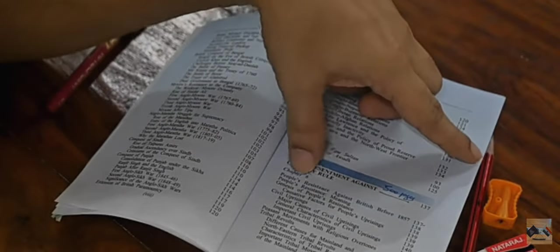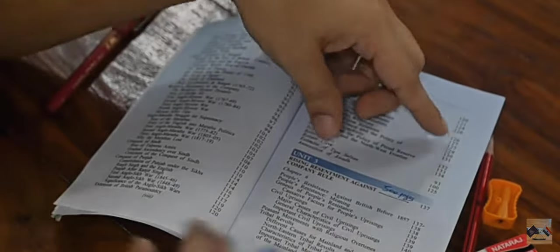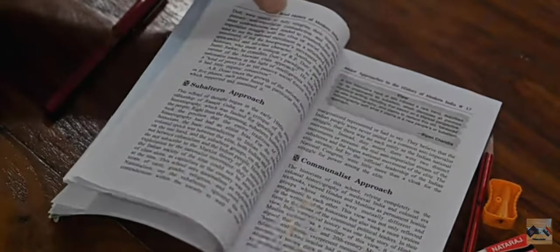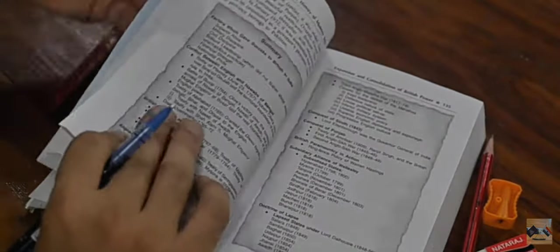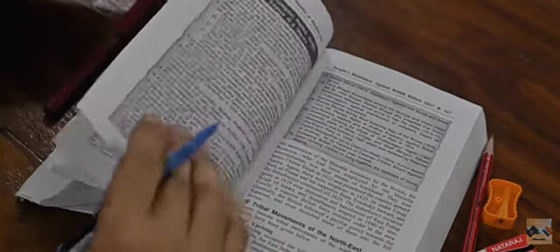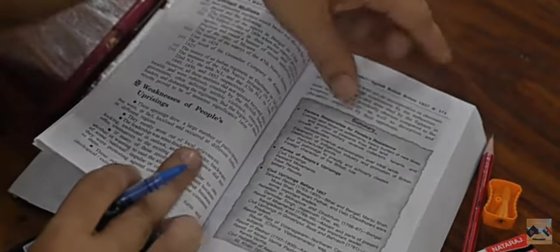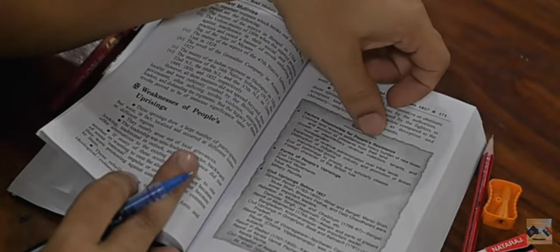We will see chapter six, people's resistance against British before 1857. This is the people's uprising chapter, and we will go through this chapter to give you a sense of how I do my readings. So I go to page number 137. This is the chapter. If you go to the end of the chapter right away, in some books the summary of the chapter is given.